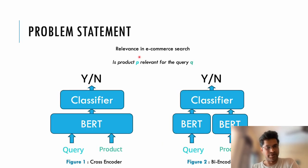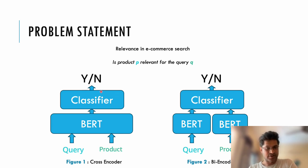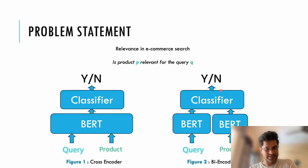Let's consider a very simple relevance classification example in e-commerce search. Our objective is to identify whether a given product is relevant to the query Q or not. This can be solved using either a cross-encoder or bi-encoders. In a cross-encoder, we concatenate a query and a product representation and pass it to a classifier to get the relevance scores. In bi-encoders, we independently encode the query and product information and apply cosine similarity or euclidean distance to get the relevance score.